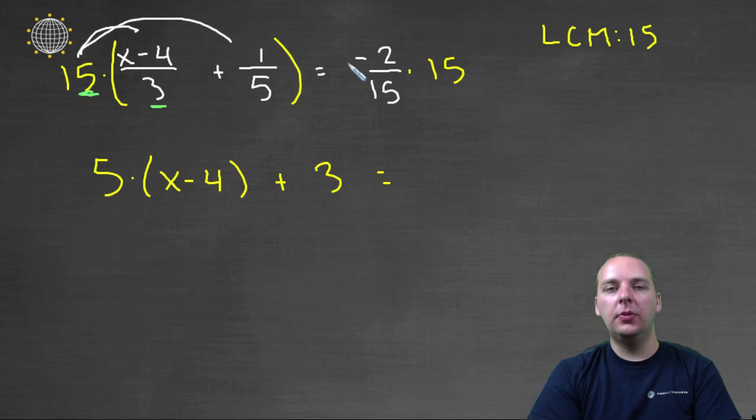And that'll equal negative two divided by fifteen times fifteen. And actually those will cancel the fifteen, and just leave you with negative two.